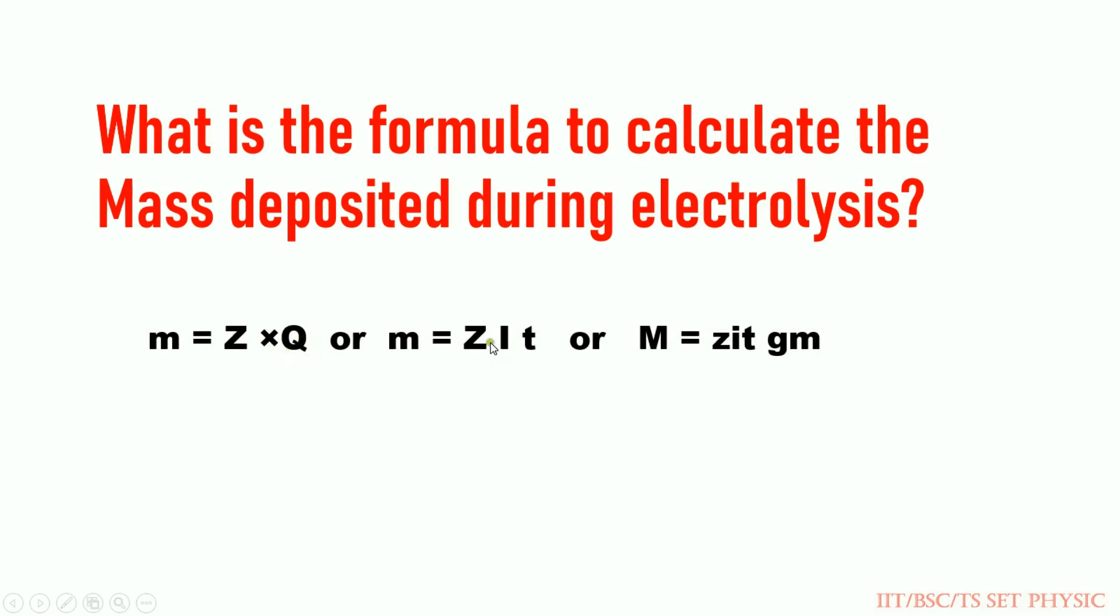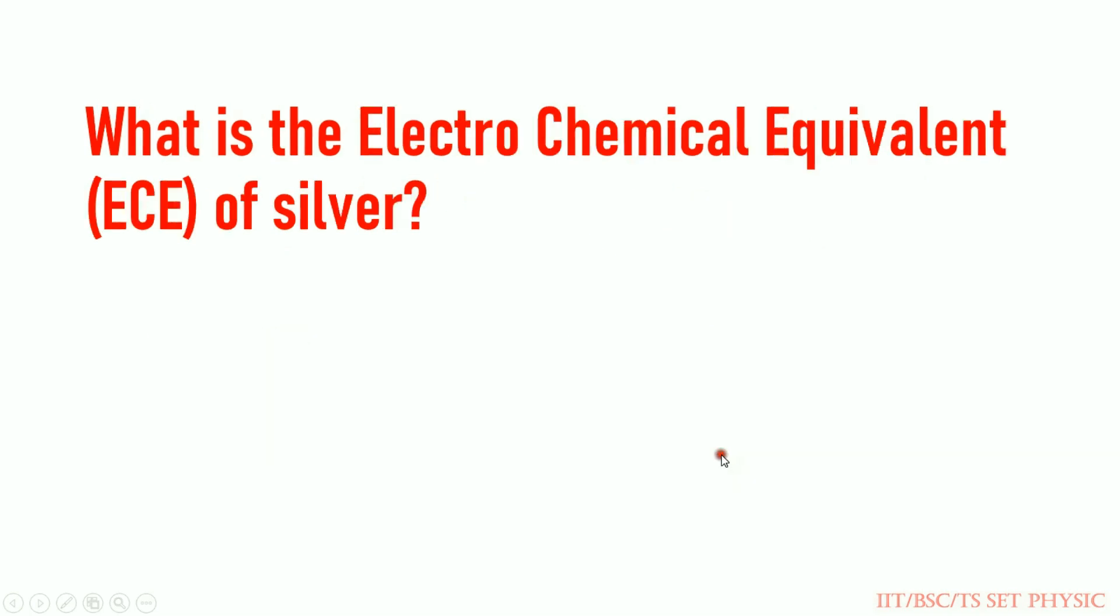It's M = Zit. Capital I times t, or small i times t. In grams: Gm = Zit.